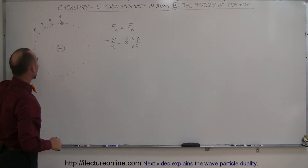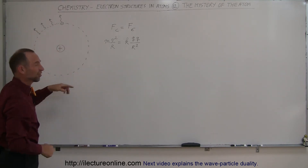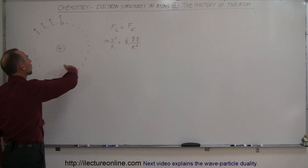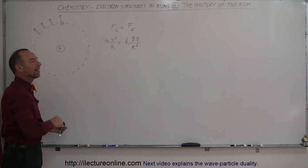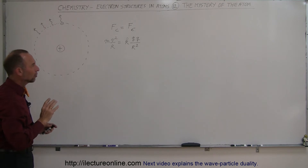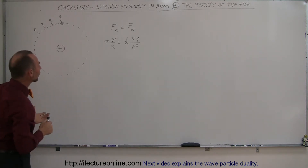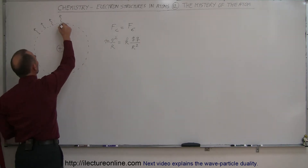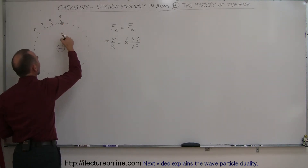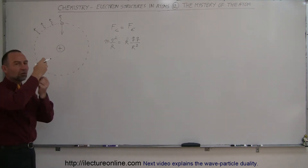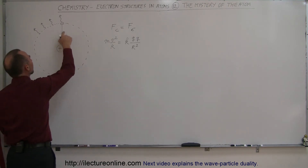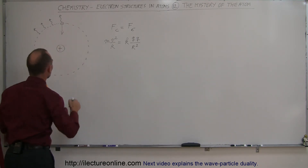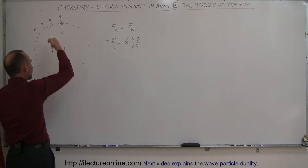Since the electron is going around in circles in a spherical shaped orbit around the nucleus, it is constantly accelerating. It feels a force of attraction, and that force of attraction is due to the Coulomb forces — the positively charged proton is attracted to the negatively charged electron.